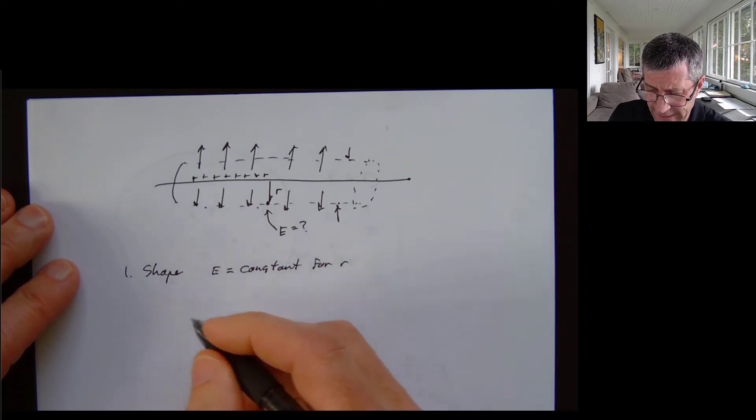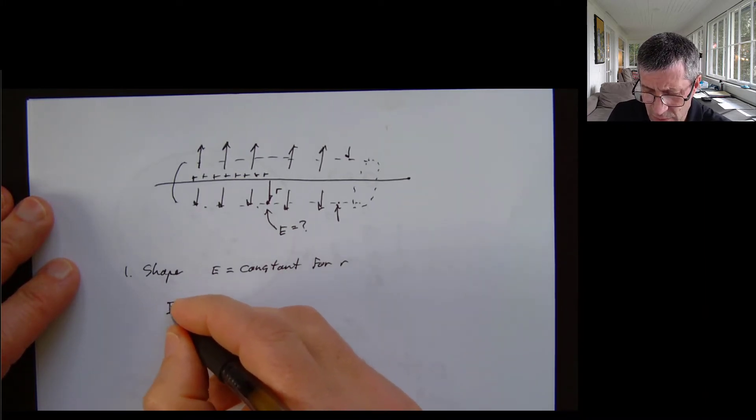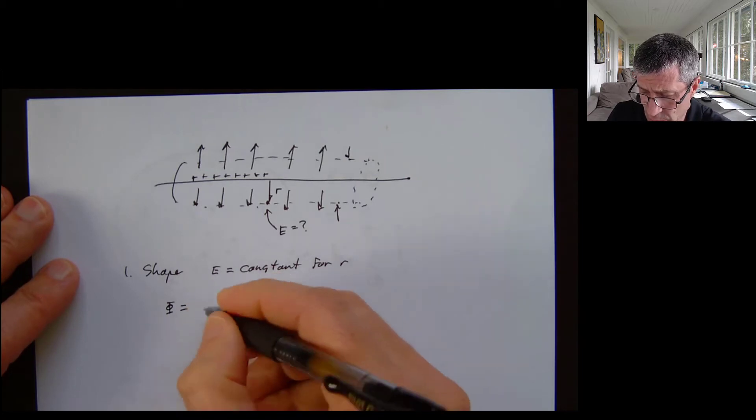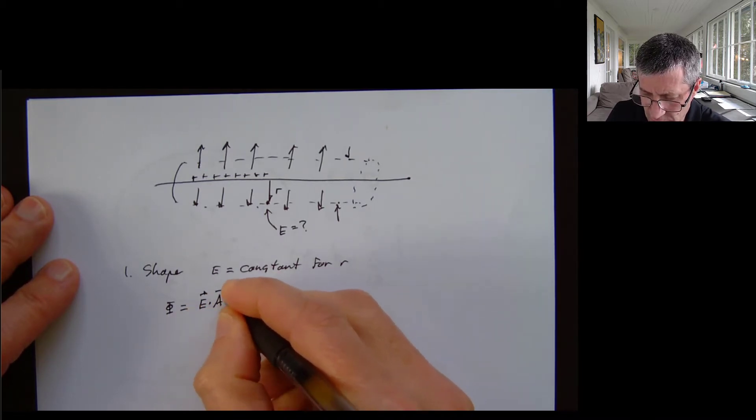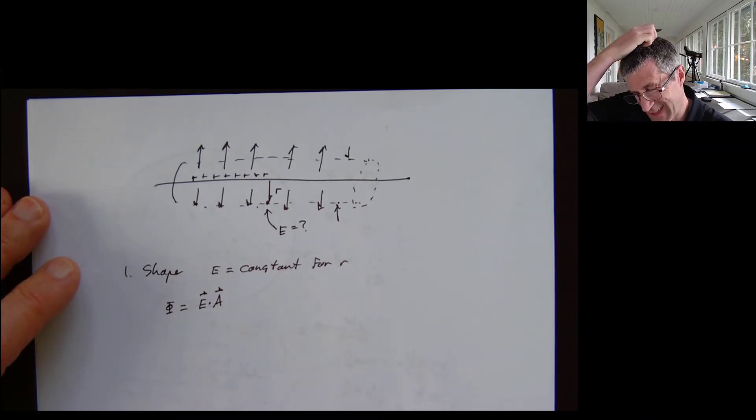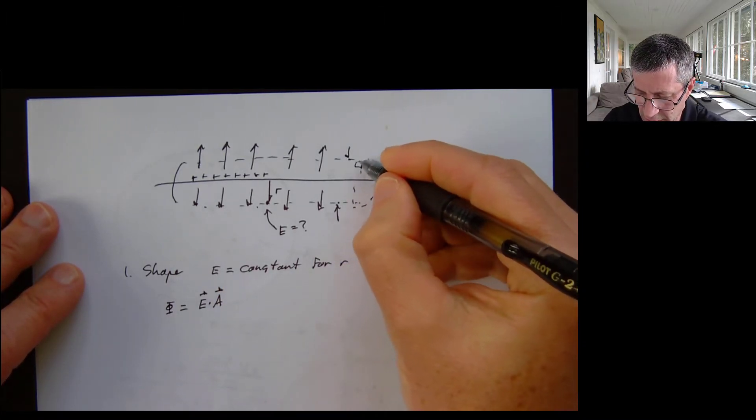So you may recall the equation that we want to use. So we have two ways to describe flux. One is that it's equal to the area times the electrical field. This is the dot product.